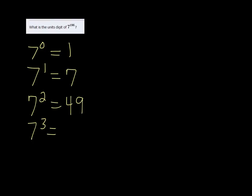7 cubed is 343. 7 to the 4th power is 2,401. And 7 to the 5th power is 16,807.